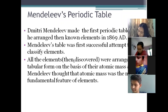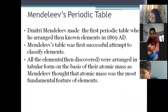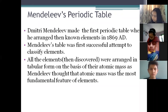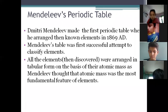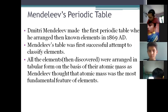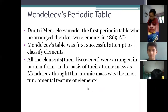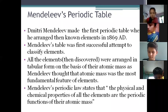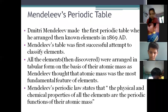All the elements then discovered were arranged in tabular form on the basis of their atomic mass. Mendeleev thought that atomic mass was the most fundamental property of any element, and that's why he arranged all the elements on the basis of atomic mass. On that basis, Mendeleev thought that the physical and chemical properties of all the elements are periodic functions of their atomic mass.